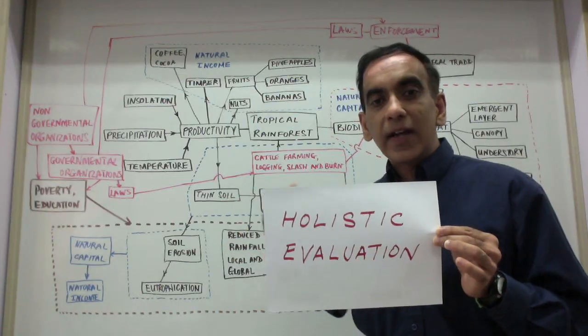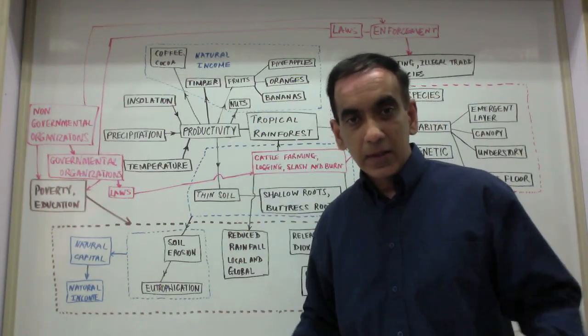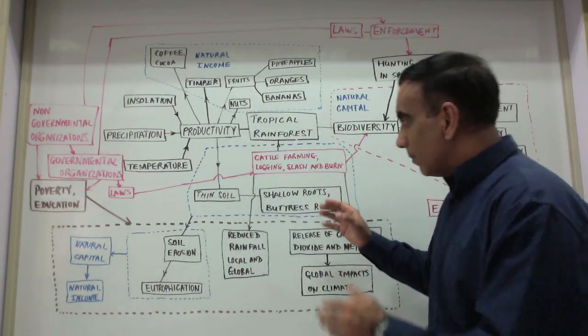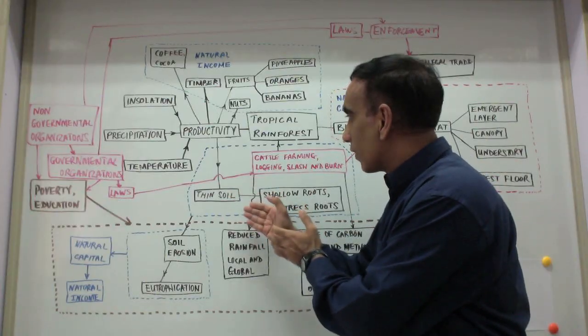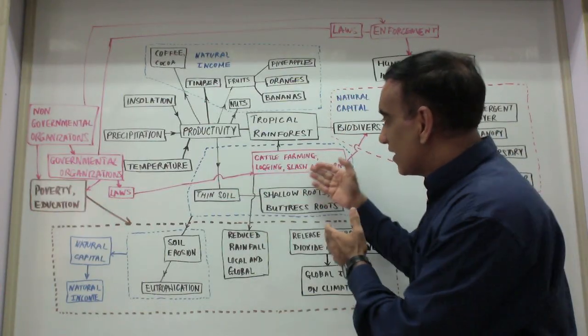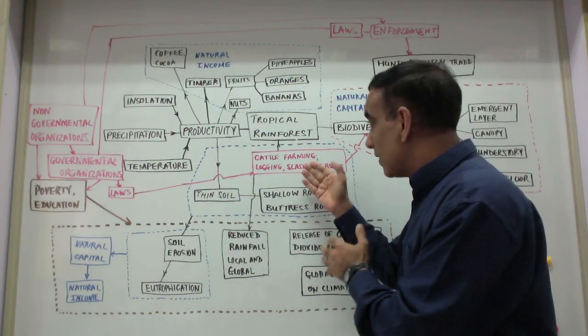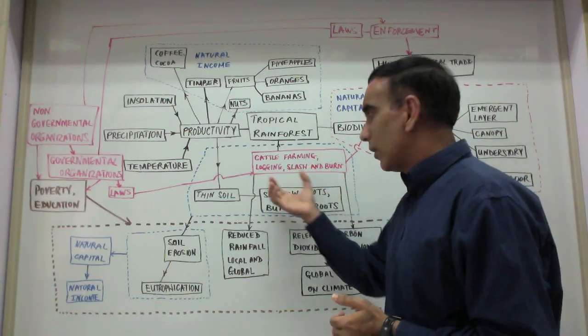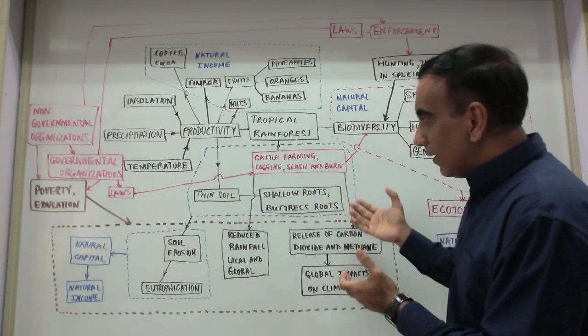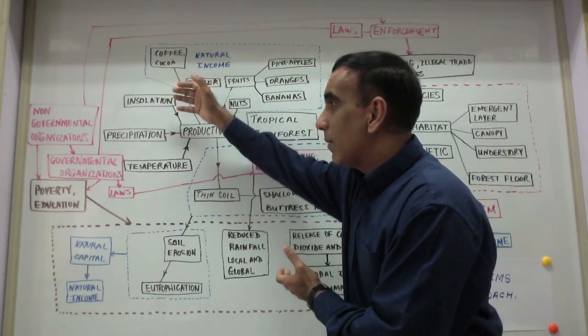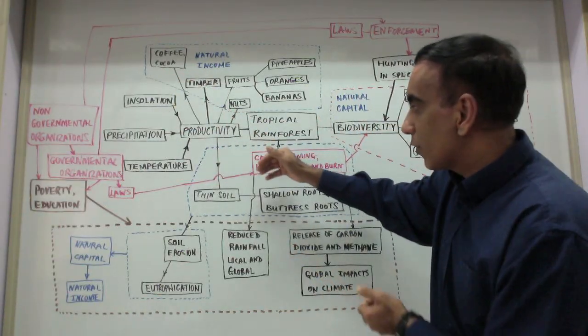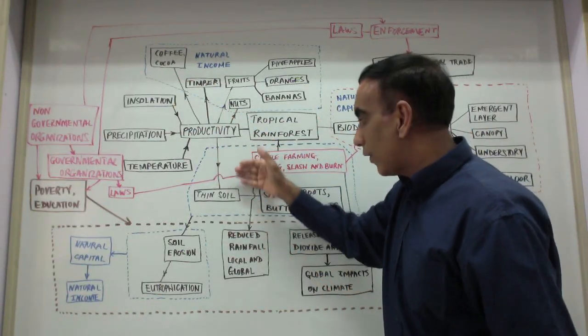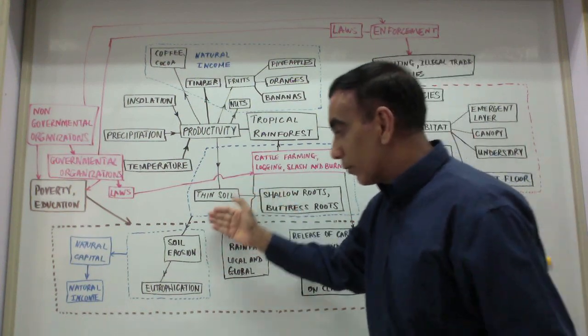But as we continue with our holistic evaluation of the rainforest, we realize that because of the thin soil, when the forest is cleared for activities like cattle farming and for slash and burn agriculture or illegal logging, then it's very easy for the high precipitation that happens in the rainforest to quickly erode the thin soil.